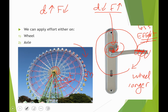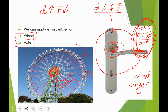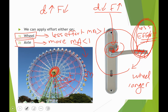We use engines and motors to rotate the axle, and when we rotate the axle we get the wheel to rotate. When you apply force to the wheel you use less force, but when you apply force to the axle you use more effort. When effort is applied to the axle, the mechanical advantage is less than one. When effort is applied to the wheel, the mechanical advantage is greater than one.